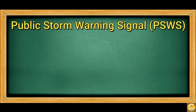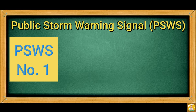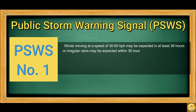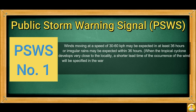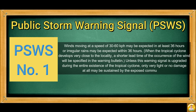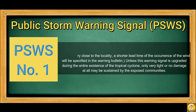Public Storm Warning Signals, or PSWS. In order to determine the strength of a typhoon, PAGASA issues public storm warning signals. PSWS Number 1: Winds moving at a speed of 30 to 60 km per hour may be expected in at least 36 hours, or irregular rains may be expected within 36 hours. When the tropical cyclone develops very close to the locality, a shorter lead time will be specified in the warning bulletin. Unless this warning signal is upgraded, only very light or no damage at all may be sustained by exposed communities.